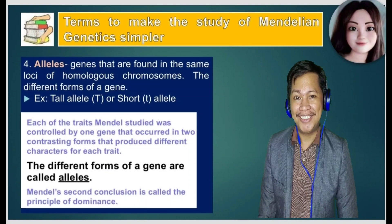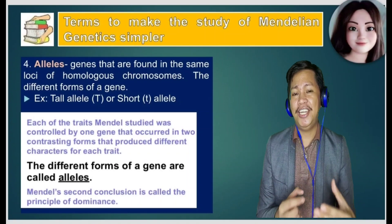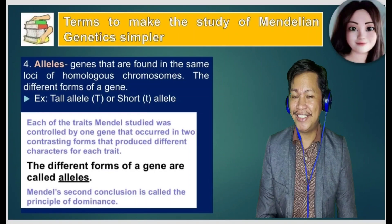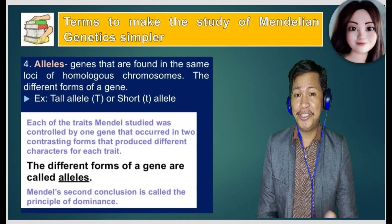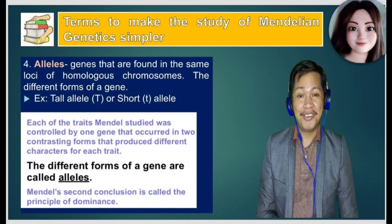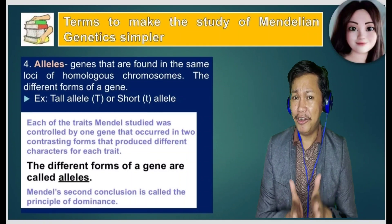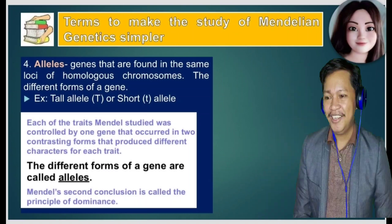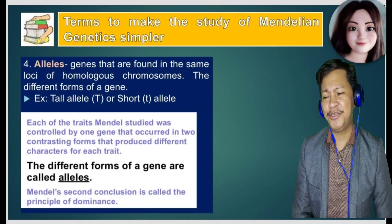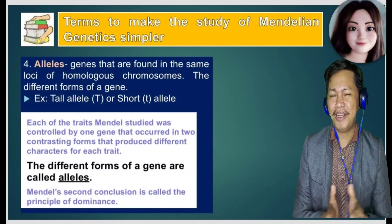Mendel's second conclusion is called the principle of dominance. His first belief was that traits can be passed on from generation to generation through a pattern of inheritance — they are inherited from generation to generation. Then his second conclusion was the principle of dominance, which distinguishes how dominant and recessive traits interact.